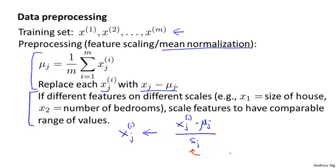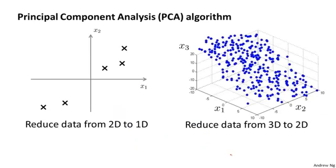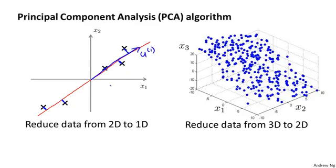Having done this data preprocessing, here's what the PCA algorithm does. From the previous video, PCA tries to find a lower dimensional subspace onto which to project the data so as to minimize the squared projection errors — the sum of the squared projection errors, which is the square of the length of those blue line segments. What we want to do is find a vector u1 which specifies that direction, or in the 2D case, define two vectors u1 and u2 to define the surface onto which to project our data.